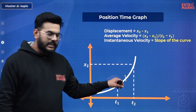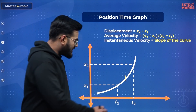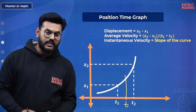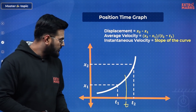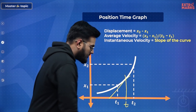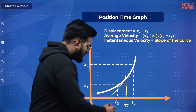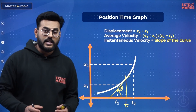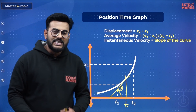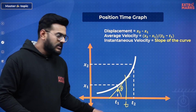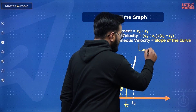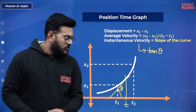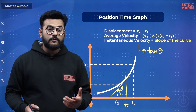If I want to find the value of instantaneous velocity at any point T, I'll draw the tangent at that point. Whatever angle the tangent makes with the positive direction of the X-axis — in this case, the time axis — the tan of that angle gives the slope, which in turn is the value of instantaneous velocity. By this method, you can find instantaneous velocity.